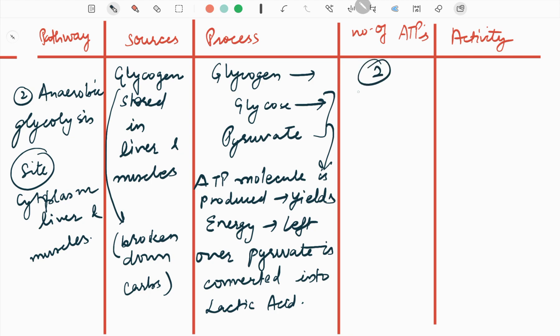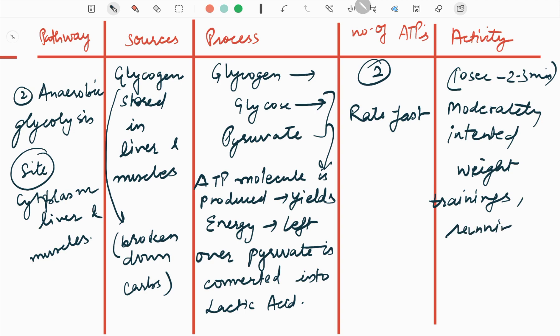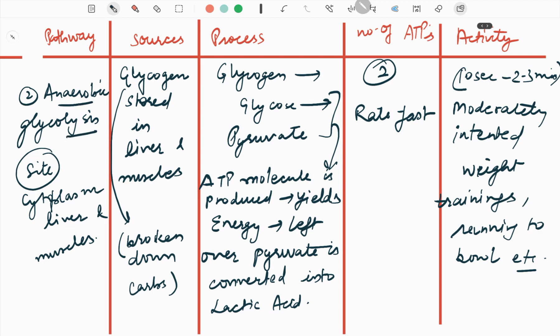Number of ATPs produced: two, and it is fast. Activities are for 10 seconds to 2-3 minutes or moderately intended weight trainings, like running, ball, etc. So this is anaerobic glycolysis: source, process, number of ATPs and activities.